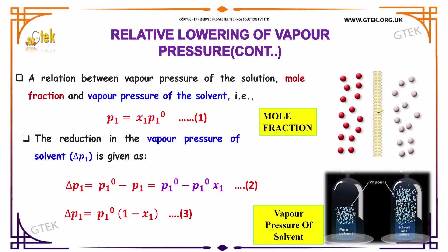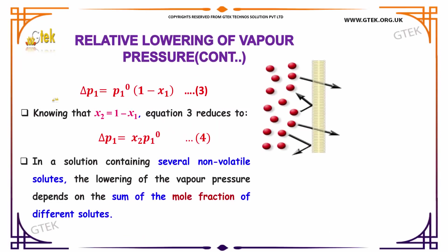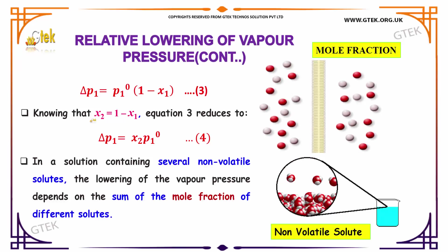The reduction in the vapor pressure of the solvent is given as delta P1 is equal to P10 minus P1, which is indicated as P10 minus P10 x1. Taking P10 out, you will be getting 1 minus x1. Delta P1 is equal to P10 into 1 minus x1.